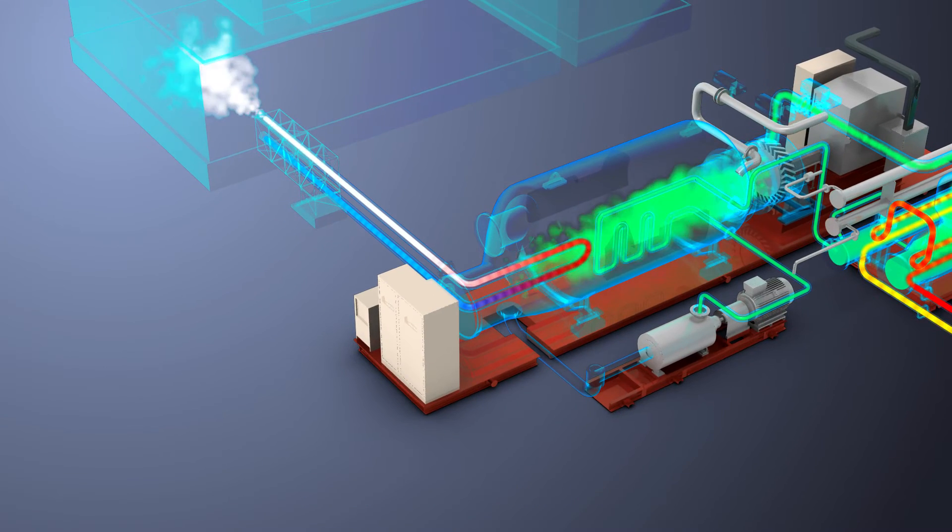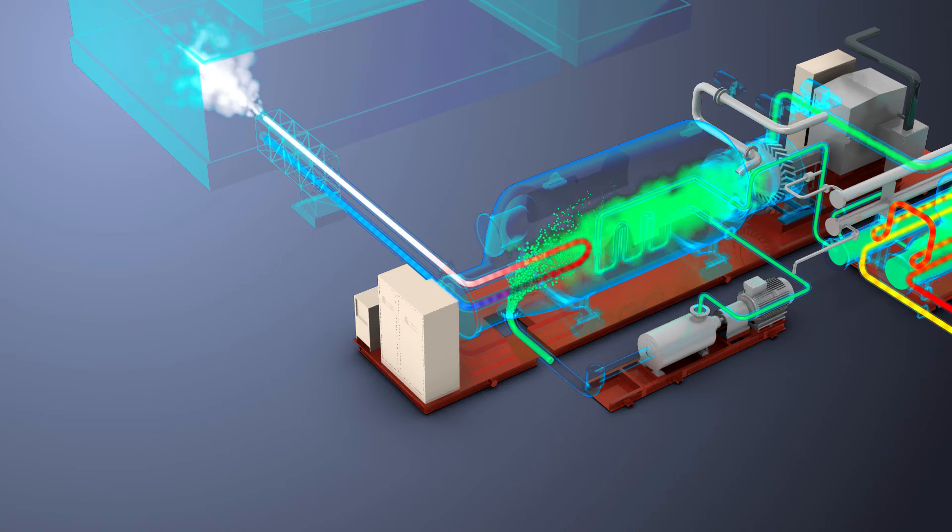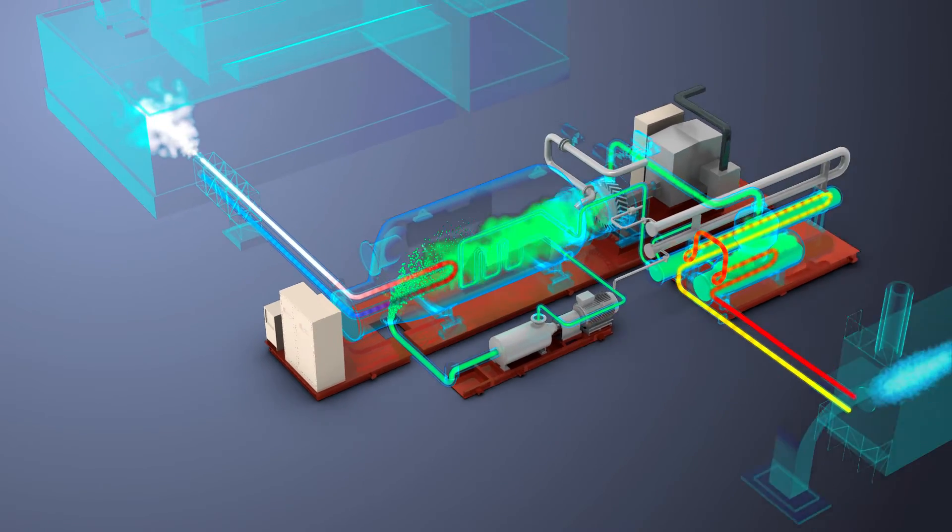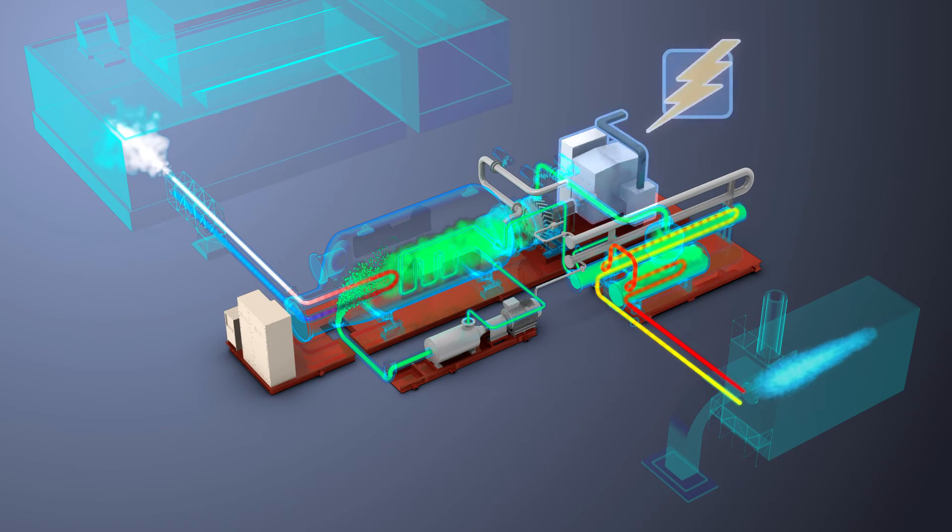From the condenser, the organic fluid in liquid phase is collected to the pump, which increases the pressure and moves the organic fluid to the regenerator, preheater and evaporator, closing the organic Rankine cycle loop.